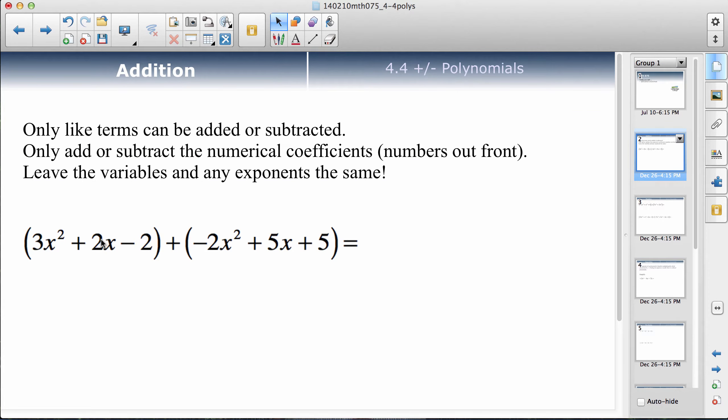When you're adding and subtracting polynomials, you can only add or subtract things that are alike. If there's an x term and a y term, you can't add those together because they're not the same. When you're adding, you only add the numbers out front, you don't add the exponents, and that's a mistake that a lot of people make.